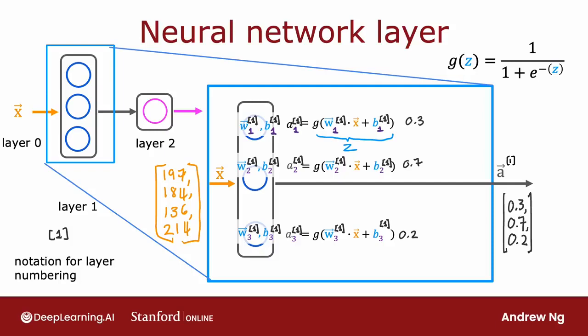I can similarly add superscript square brackets to denote that these are the activation values of the hidden units of layer one. The key thing to remember is: whenever you see superscript square bracket one, that refers to a quantity associated with layer one; superscript square bracket two refers to layer two, and so on for other layers as well.